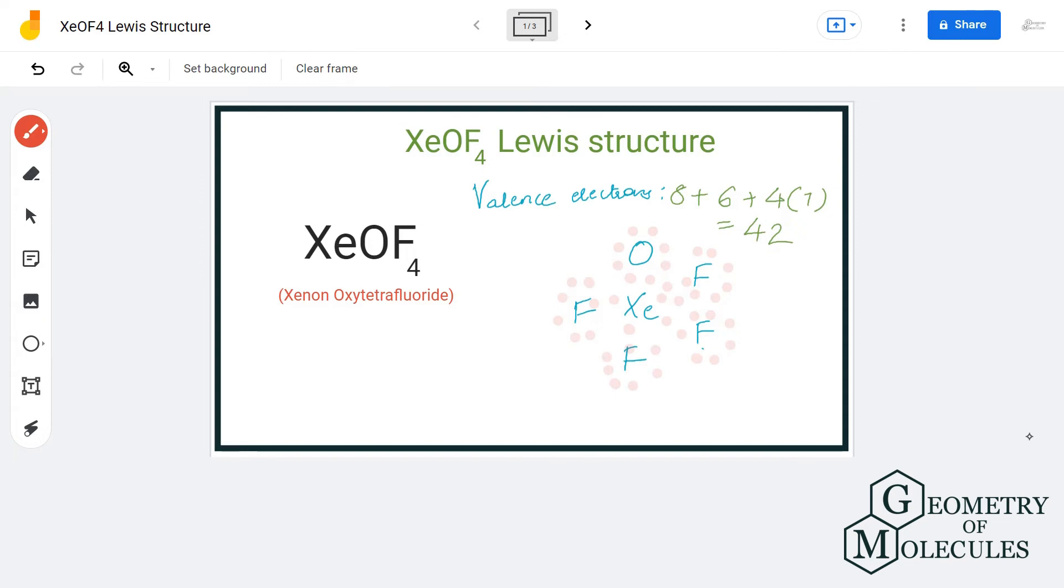Now it might seem that this is the most relevant Lewis structure for this molecule, but as xenon can have expanded octets, it is always better to check for formal charges. If you check the formal charges of this